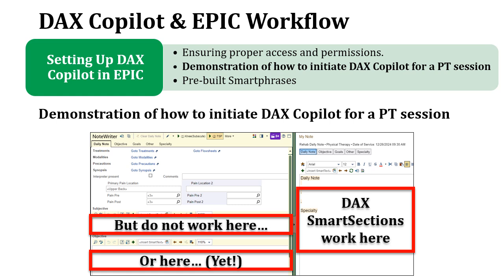That would be key because then we could actually create macros that would already have the smart sections built in. You can see I've highlighted — I know it's small — the T-spine macro for my daily note. By clicking on that, it would populate in future. Our hopes are that this would allow the smart sections to automatically be populated within the smart boxes below. But as of right now, we have to type it in the right-hand portion of the note writer.